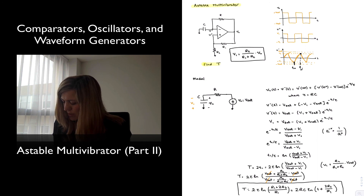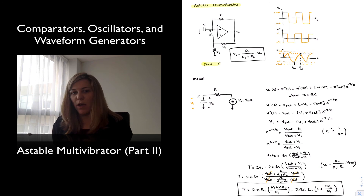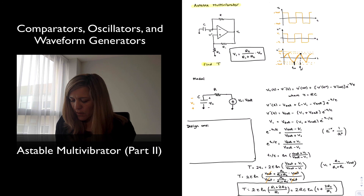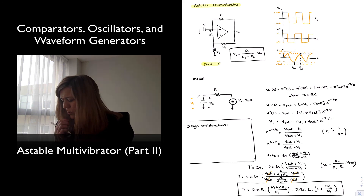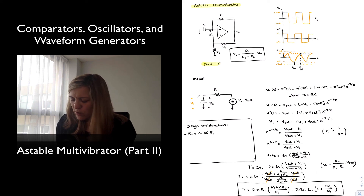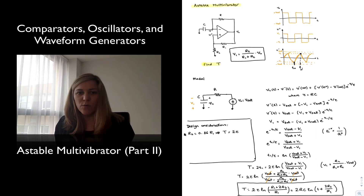There are a few design considerations for the circuit. The first is that a typical value chosen is R2 = 0.86R1. The reason for this choice is that it simplifies the period to T = 2τ = 2RC, making the selection of component values straightforward.